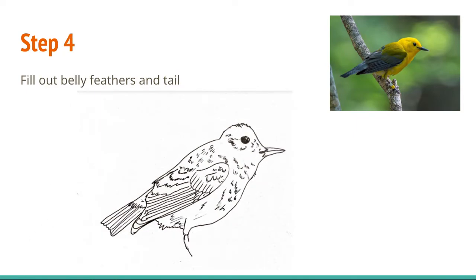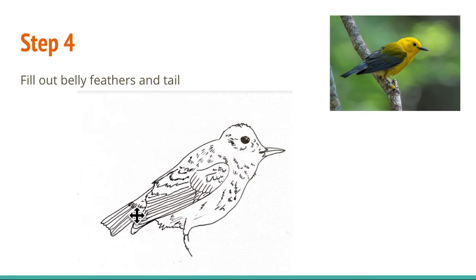The next step is to fill out the stomach feathers and also the tail. Depending on the bird you might need to go into some detail with streaks or spots on the stomach, but because this is a prothonotary warbler it doesn't have any striking patterns on the stomach. All I'll do is make some small marks to indicate feathers. For the tail, a lot of the time what you're doing is just drawing lines from the rump to the end of the tail, and if you want you can also indicate some feathers on the rump.